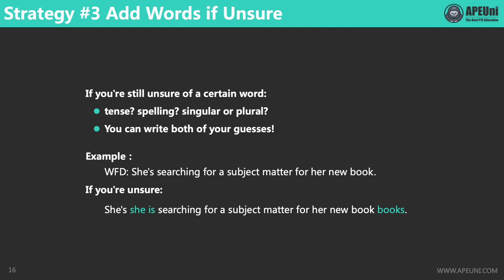After the grammar check, if you're still not sure about certain words — such as their tenses, spellings, or singular/plural forms — you can write down both of your guesses. As mentioned earlier, you can write up to three additional words without any loss of marks. For example, for the sentence 'She is searching for a subject matter for her new book', if you're not sure whether the speaker said 'she's' or 'she is', you can write both. If you're not sure whether the final word is 'book' or 'books', you can write both. Just remember: you can safely add a maximum of three words.